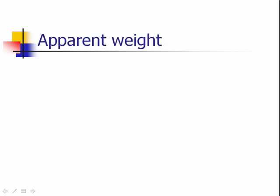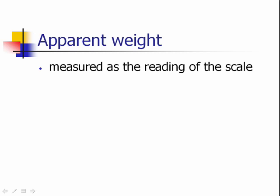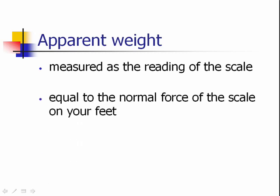Now, to summarize, the apparent weight is measured as the reading of the scale. It's equal to the magnitude of the normal force, the scale pushing up on your feet, or whatever is below you pushing up on your feet. If you are standing in your bathroom with zero acceleration, it is equal in magnitude to the true weight, the gravitational force. But it is not the same force.